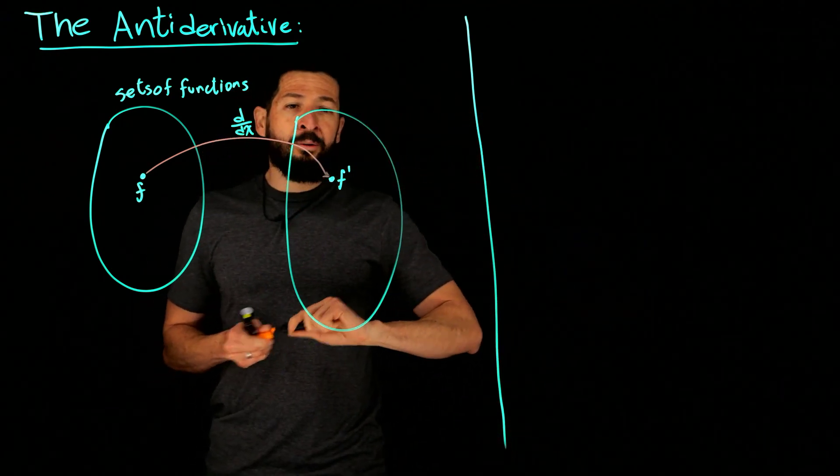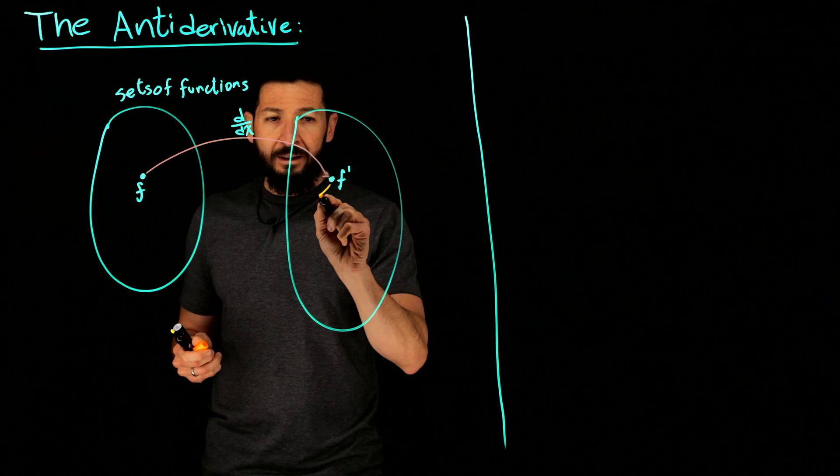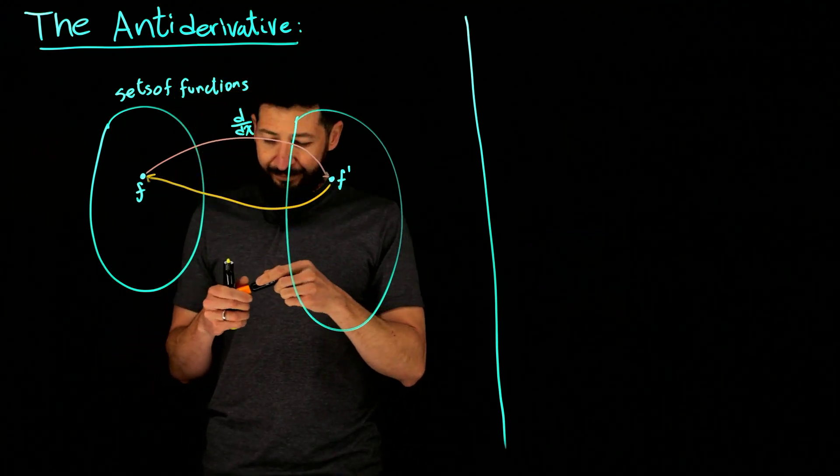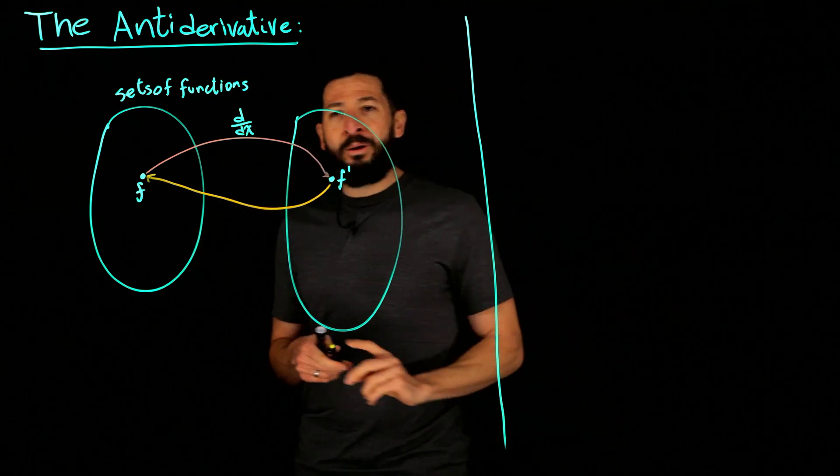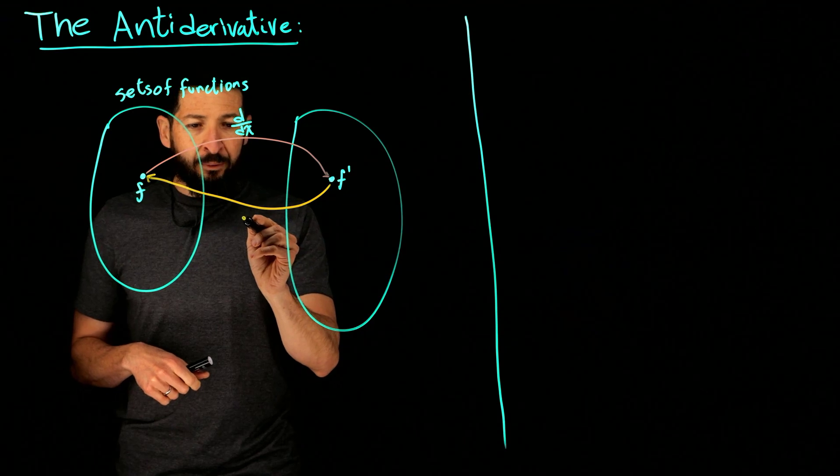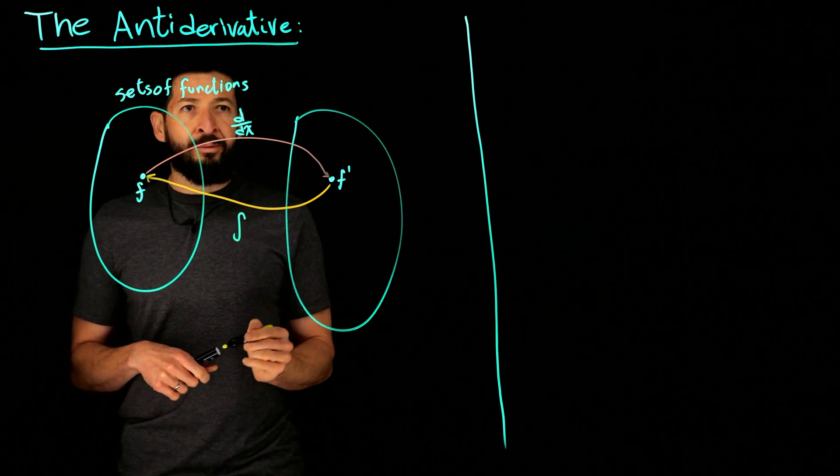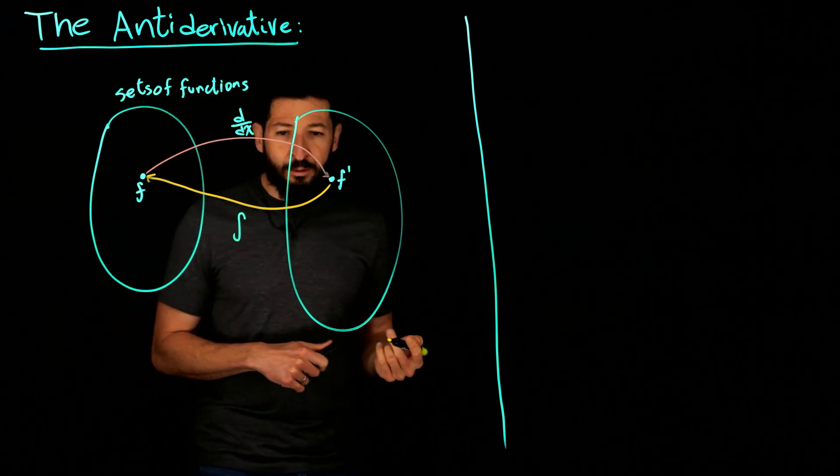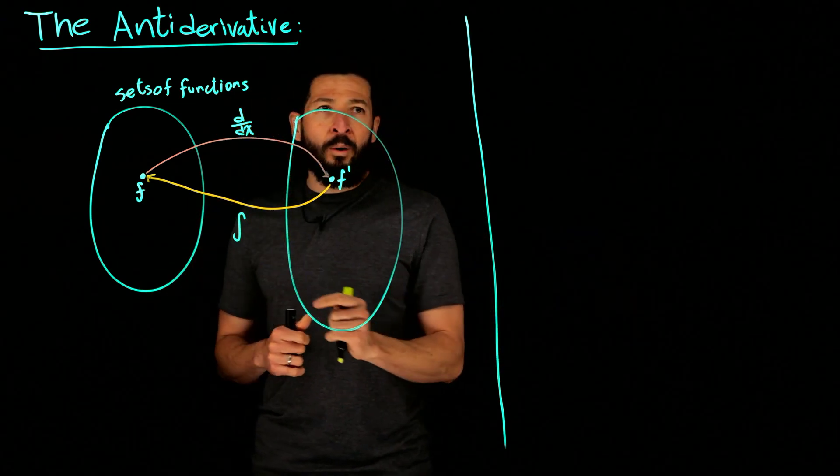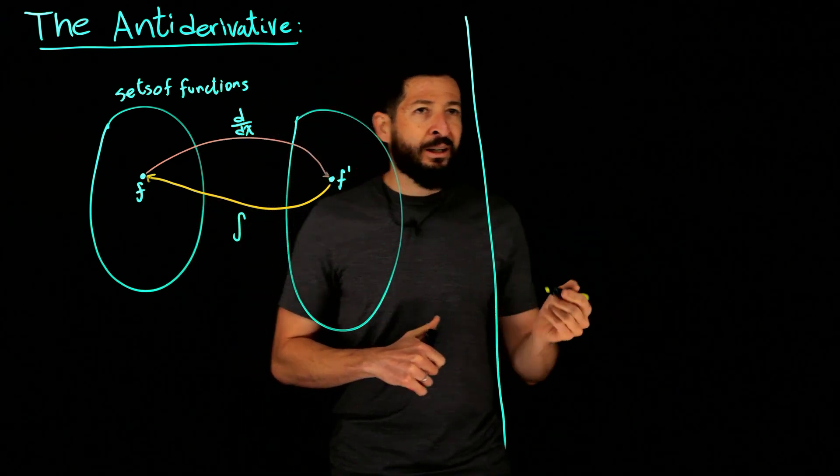And then we would like to have something that goes back to that f. And we don't quite get that, but we almost get it. And we're going to call that the antiderivative. But now I have to tell you a couple things about it. I said that we wouldn't quite get there, and let me give you an example.